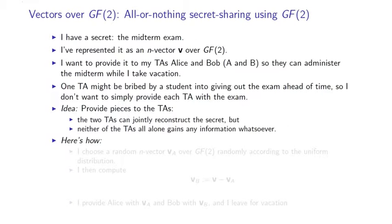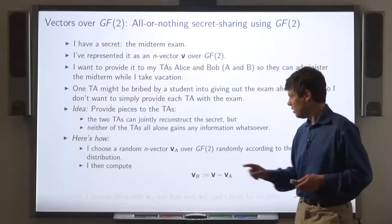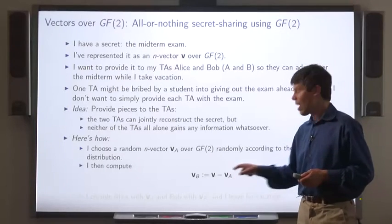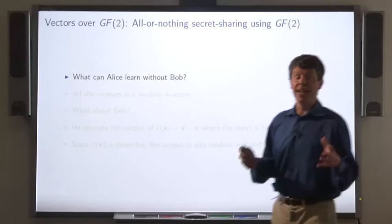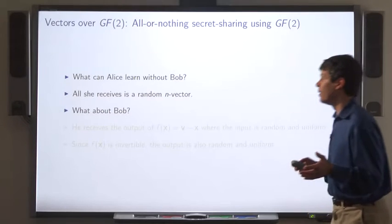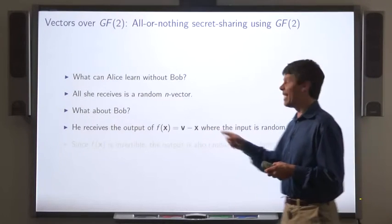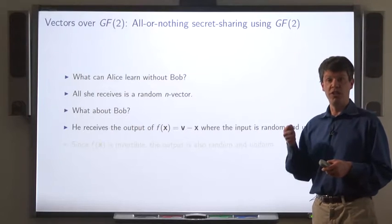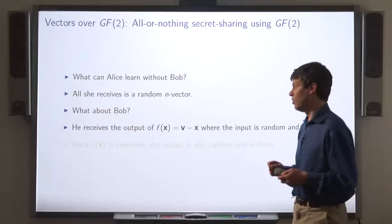So here's the solution. I start by choosing a random n-vector over GF2 — let's call it VA. I then compute VB by subtracting, which is the same as adding in GF2, VA from V. Now I provide VA to Alice, one of my TAs, and VB to Bob, the other TA, and I leave on vacation. What does Alice learn from her part? Well, all she receives is a random n-vector. What about Bob? The part he receives is the output of a function f(x) = v minus x, where the input is chosen according to the uniform distribution. Since this function is invertible, the output is also distributed according to the uniform distribution. So he learns nothing.